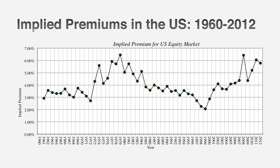Implied premiums carry a message that we ignore at our own peril. Let's say it's the start of 2013 and you work at an investment bank or equity research house. Everybody uses 4.2% — the historical risk premium — to value companies, but the implied premium is 5.8%. Use a 4.2% premium and everything looks cheap to you, not because the company is a great investment, but because you used too low a premium and think the market is cheap. So even if you decide not to use implied premiums, you should at least know what it is at any point in time.